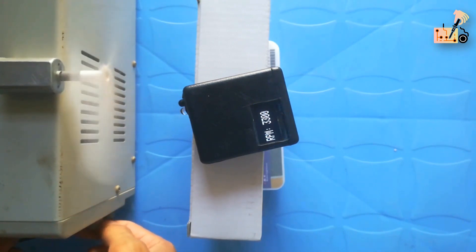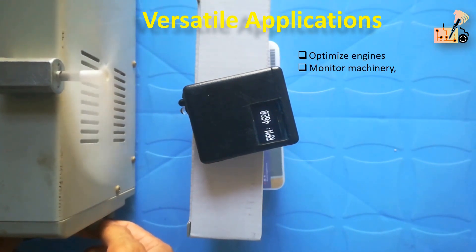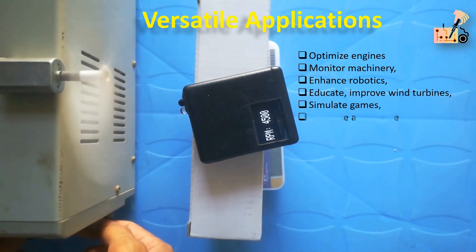The DIY Arduino tachometer is a multi-use tool. Optimize engines, monitor machinery, enhance robotics, educate, improve wind turbines, simulate games, optimize agriculture, and aid research with precise RPM measurements across diverse fields.